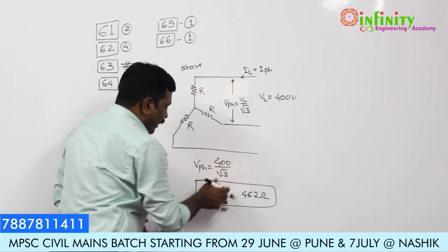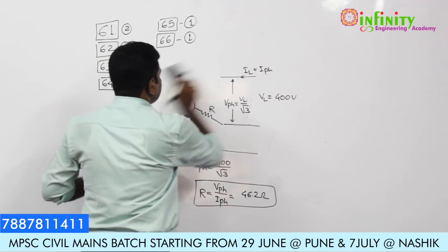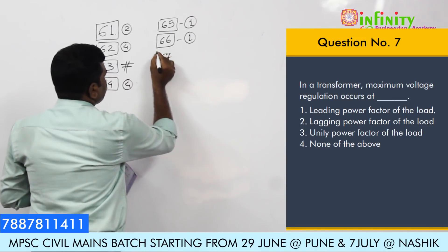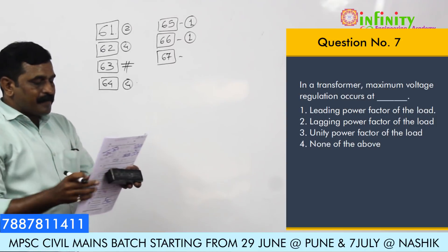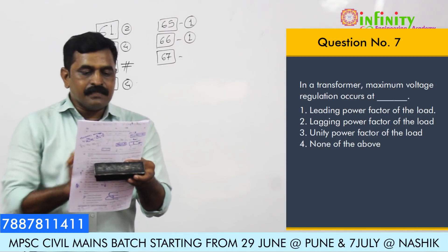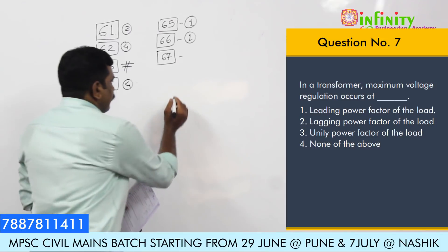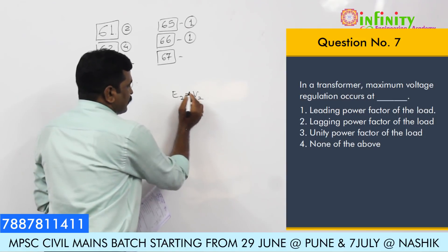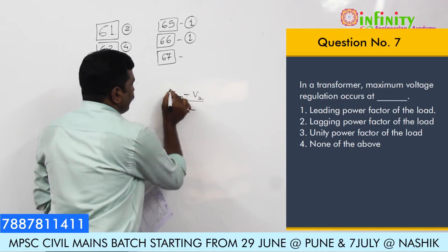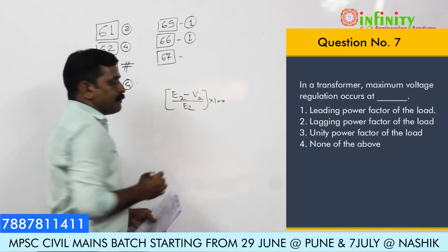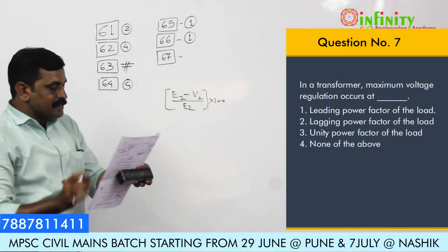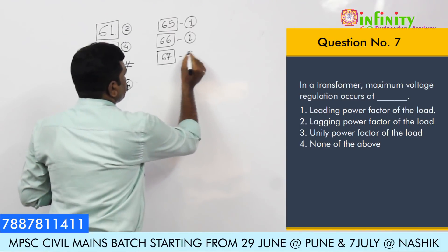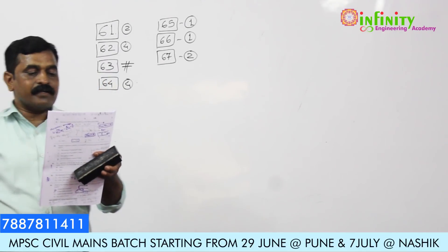Question number 67 is a theoretical concept. In a transformer, maximum voltage regulation relates to induced EMF and terminal voltage: percentage regulation equals (E2 minus V2) divided by E2, multiplied by 100. This is associated with the lagging power factor of the load. So the answer is option 2: lagging power factor of the load.